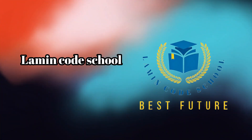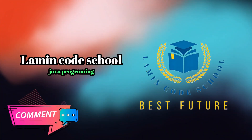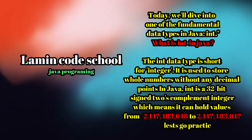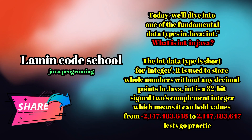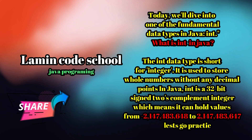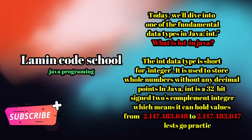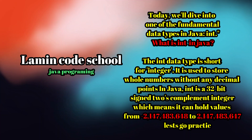Welcome to my channel Lemon Code School Java programming tutorial. Today we'll dive into one of the fundamental data types in Java: int. The int data type is short for integer. It is used to store whole numbers without any decimal points. In Java, int is a 32-bit signed two's complement integer, which means it can hold values from minus 2,147,483,648 to 2,147,483,647.